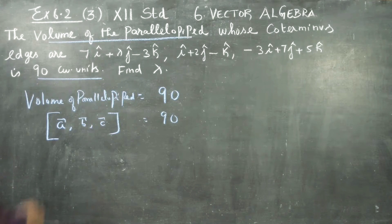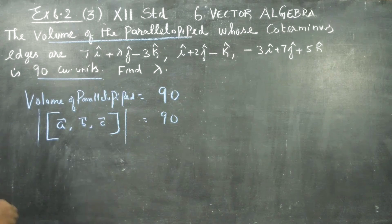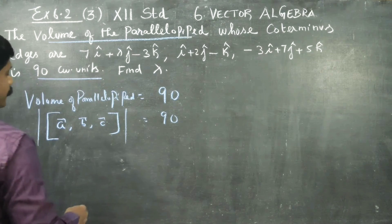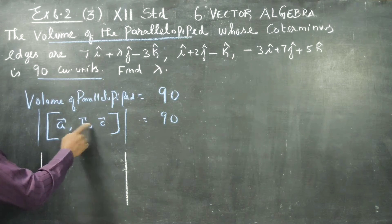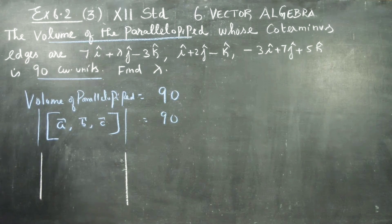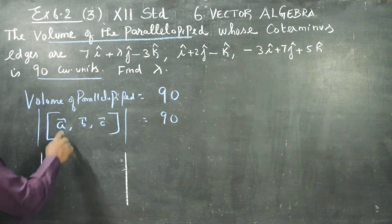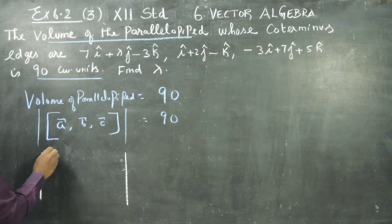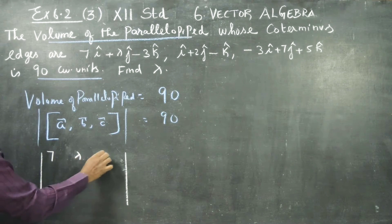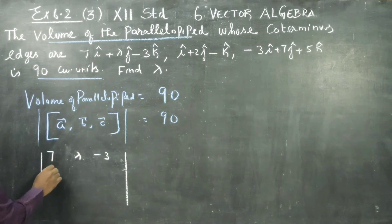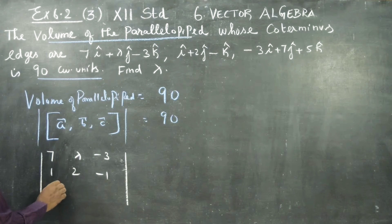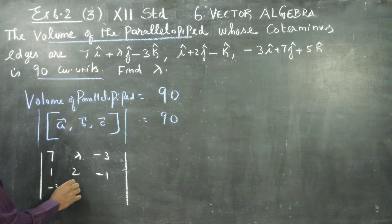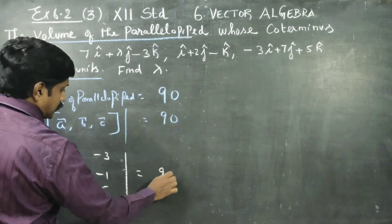What is my A, B, C? A-vector is (7, 7, lambda, -3), B-vector is (1, 2, -1), and C-vector is (-7, 3, 7). Setting this scalar triple product equal to 90.